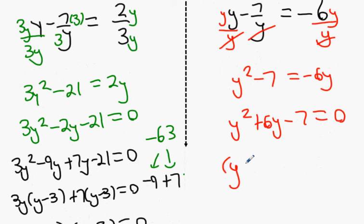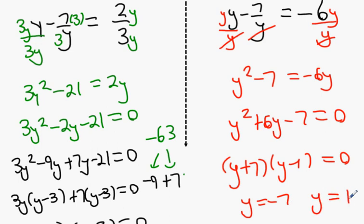Then do the same thing again. You're going to get y plus 7 y minus 1 equals 0. y equals minus 7, y equals 1.